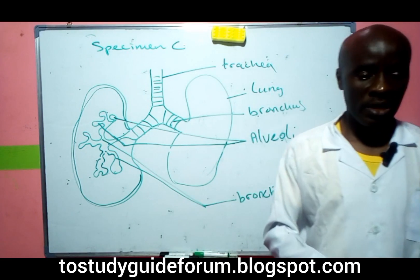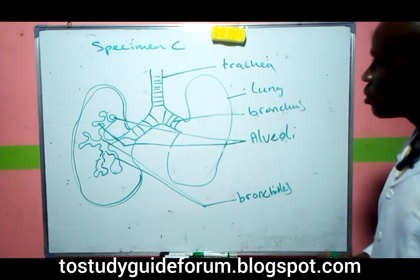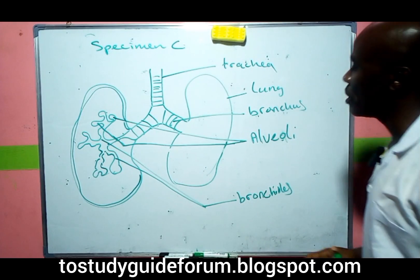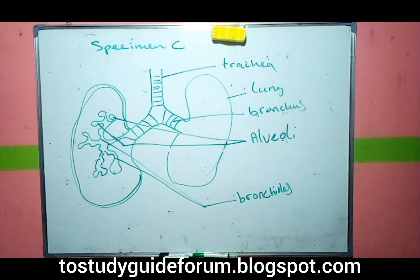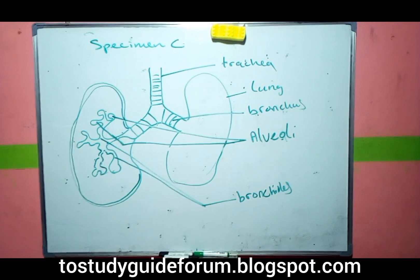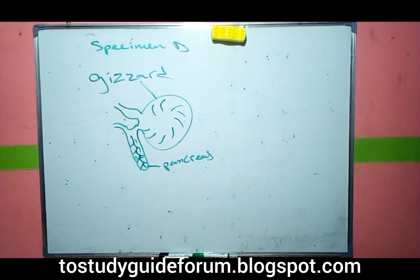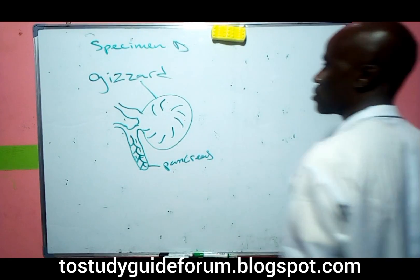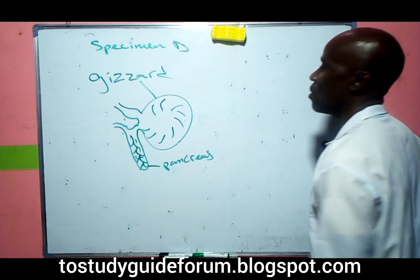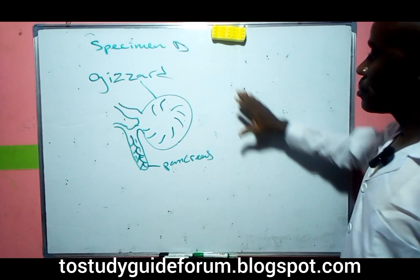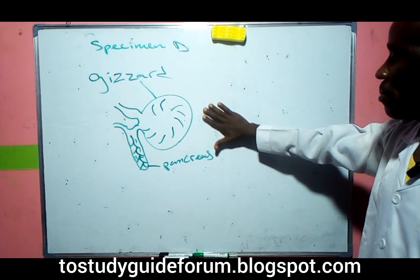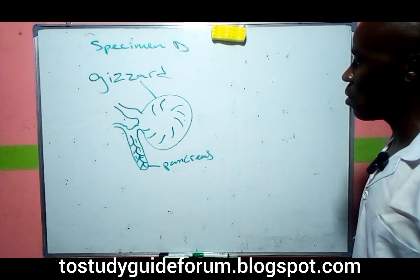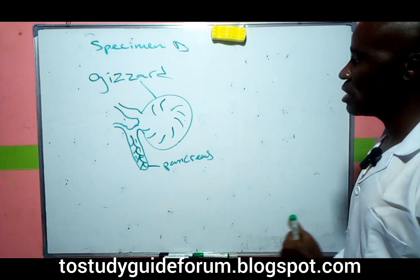Now we move to Specimen D, the gizzard. This is the gizzard of a bird. The major function of the gizzard is mechanical digestion.